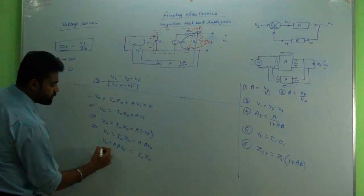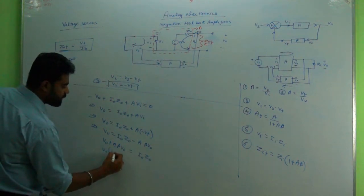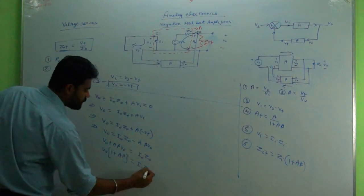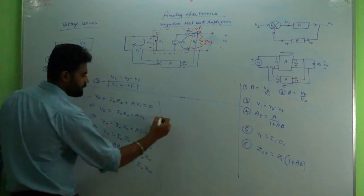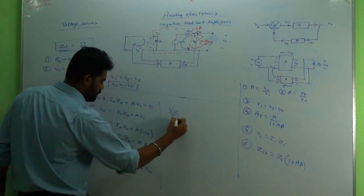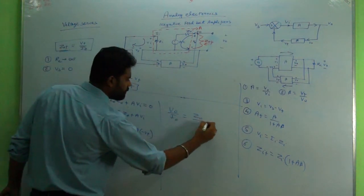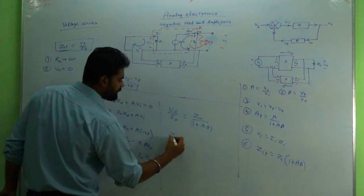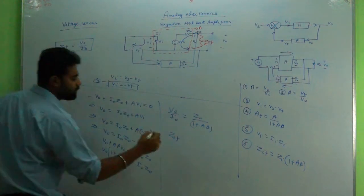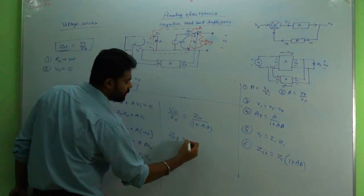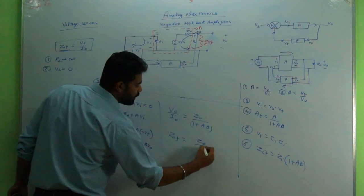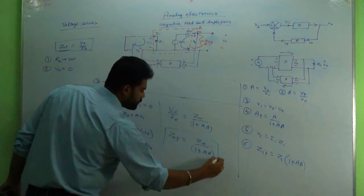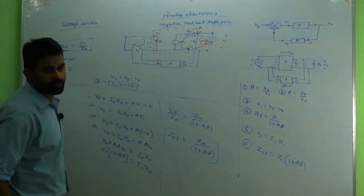So V0, if taken common, is 1 plus A beta equals I0 Z0. And similarly, V0 upon I0 equals Z0 upon 1 plus A beta. So this is nothing but ZOF, as we have already written V0 upon I0. So ZOF equals ZO upon 1 plus A beta.